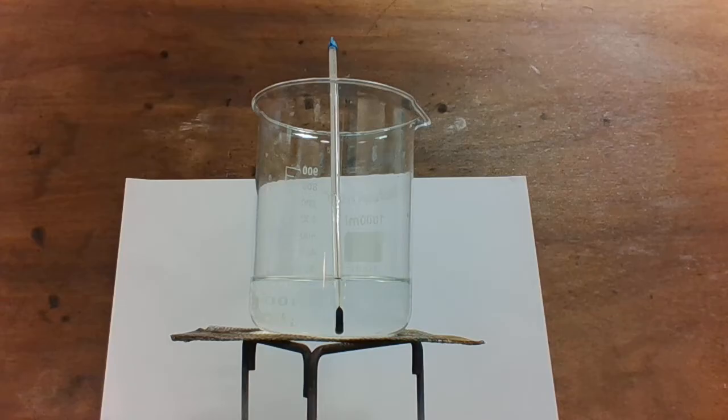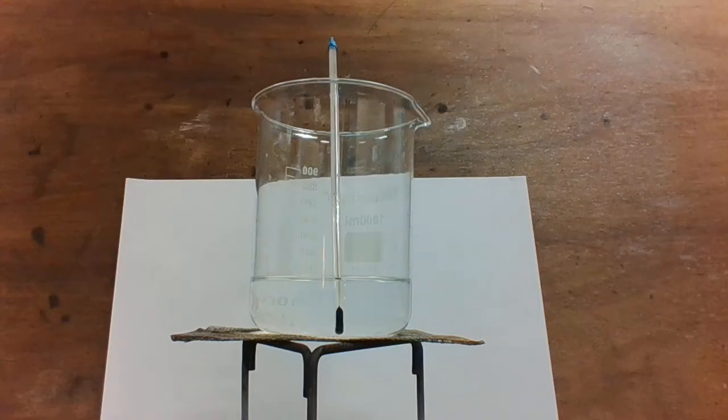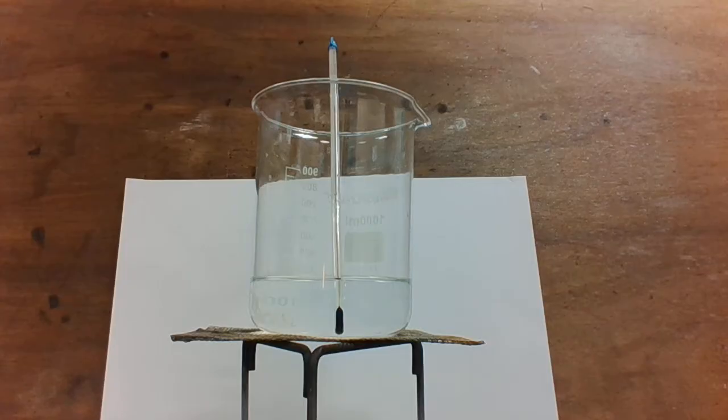In the large beaker, I have a solution of potassium sodium tartrate at about 60 degrees Celsius, to which I'm going to add some hydrogen peroxide solution, also at 60 degrees Celsius. The reaction between these solutions produces oxygen gas, so effervescence will be seen when the reaction occurs.